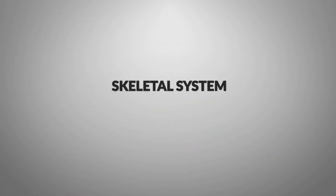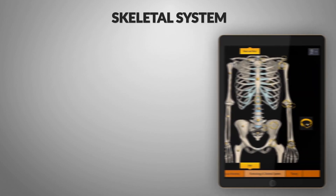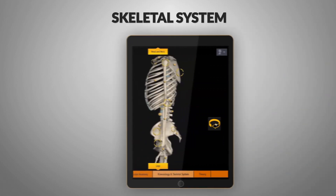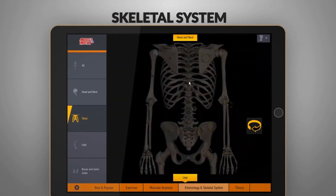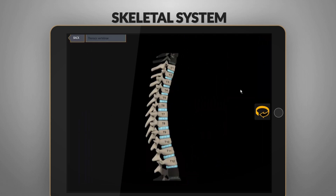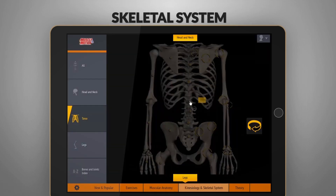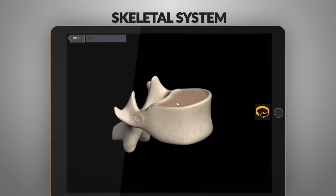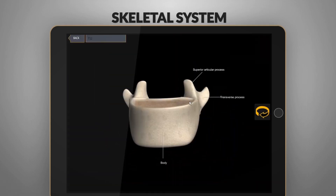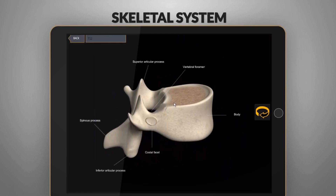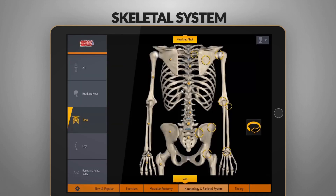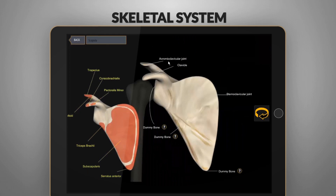Skeletal System. View the skeletal system in 3D. Rotate each bone so that you can see it from all directions. The skeletal system is extremely accurate and creates an interactive connection with the muscular system. See how the muscle that is attached to the bone moves it.